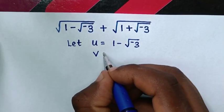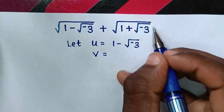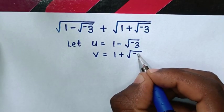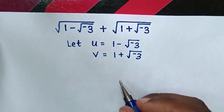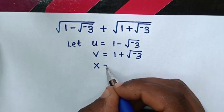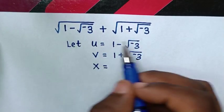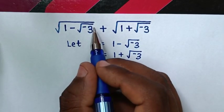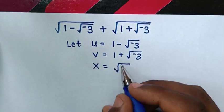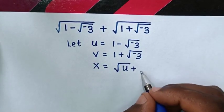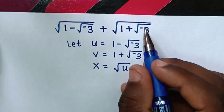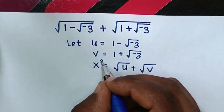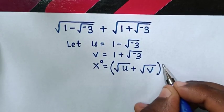And also we let v be equal to the expression under the second square root, which is 1 plus square root of negative 3. Then we let x be equal to the whole expression, which is square root of u plus square root of v. Then in the next step we square both sides.